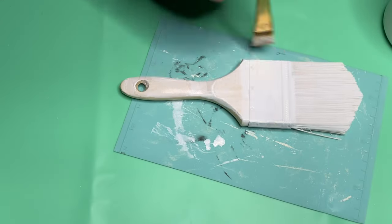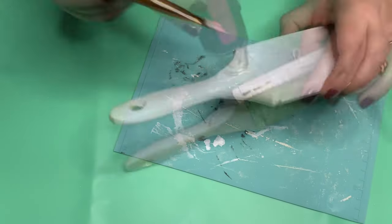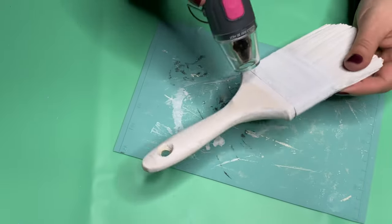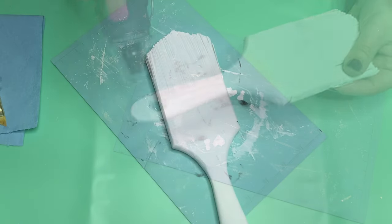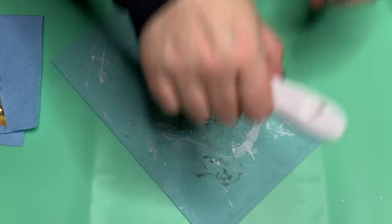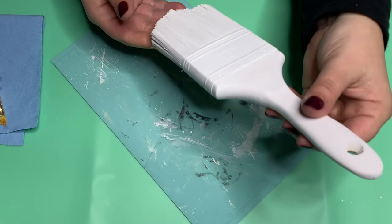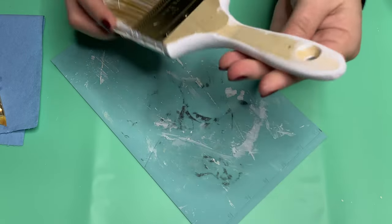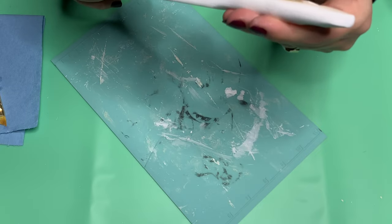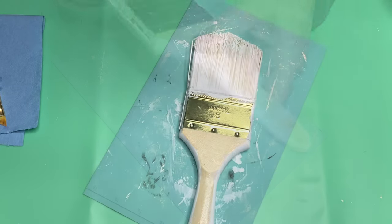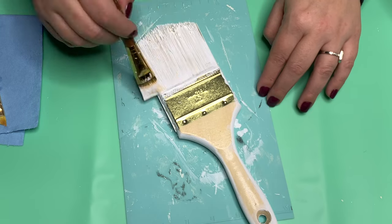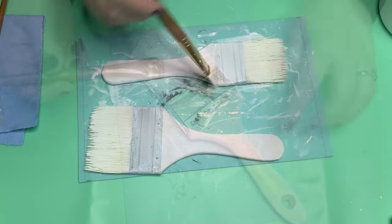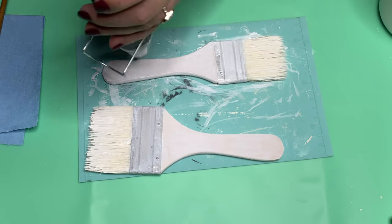In between each coat, I used a heat gun because I'm impatient, but you don't have to. Again, I painted that handle so everything became white on this side, and then I just turned it over and did it again on the other side. You don't have to do this if you're not creating reversible brushes.